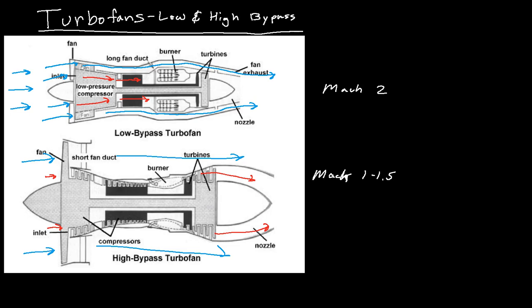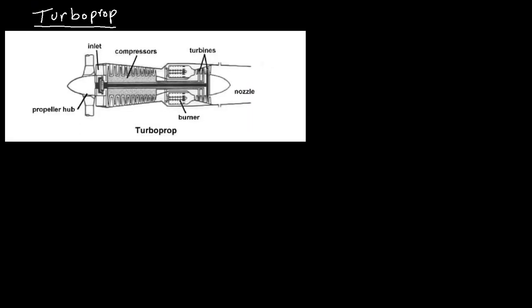So, from there, we have turboprops. Now, you may think that the propellers that you see on small commuter airplanes are just piston engines. A lot of them are like Cessnas and whatnot. But some of them, the larger propeller engines, are actually turboprops. And the only difference is you basically have, instead of a fan like the turbofan, you have a propeller. And then there's a little bit of air that goes past the propeller into the compressor. And it works just like a turbojet does. Same exact cycle, same exact idea.